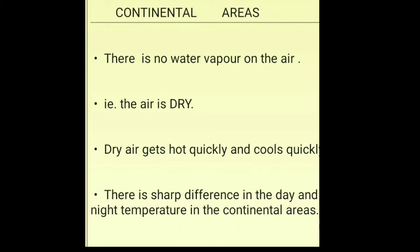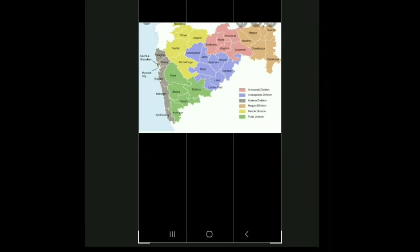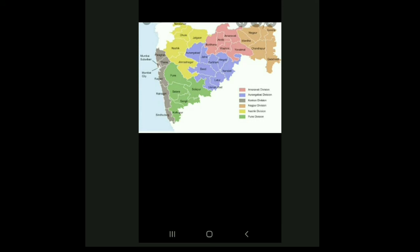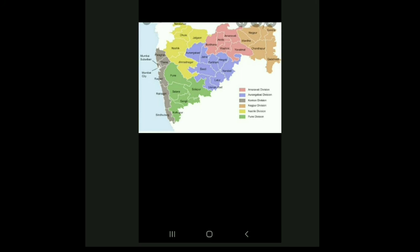In short, the difference in the day and night temperature is less in the coastal area and more in the continental area. For example, if we take places in the coastal area, say Mumbai — Mumbai is along the coast. And if we take Nagpur, it is in the continental area.